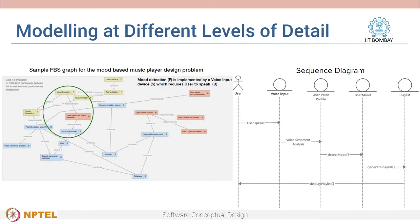Both modeling techniques serve different purposes. Based on requirements, we can create an FBS representation as a way to create an idea or concept of the system we want to build. From that concept, we can go into more detail and create UML diagrams for the software system. These models are at different levels of detail — on the left you can see an FBS graph of the mood-based music player, and a part of the functionality, mood detection, is detailed in the sequence diagram shown on the right.